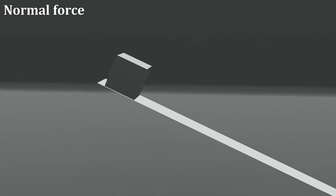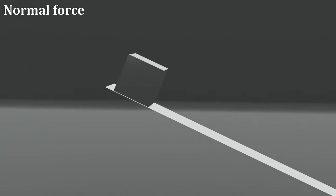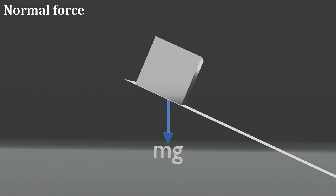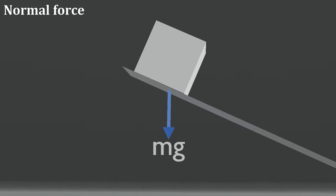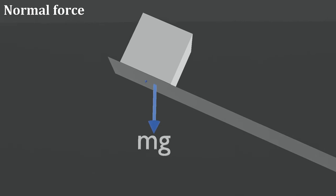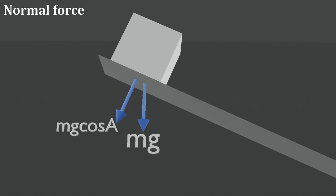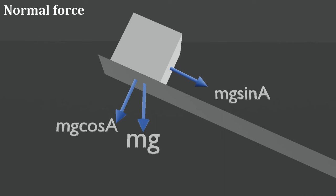Due to gravity, the total weight of the metal block acts downward. As the surface is inclined, weight mg has two rectangular components: mg cos alpha and mg sin alpha, where alpha is the angle of inclination of the surface.